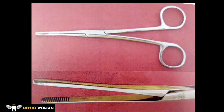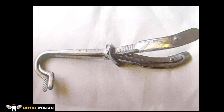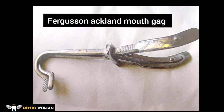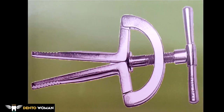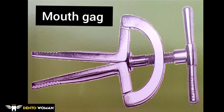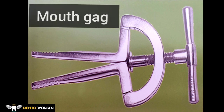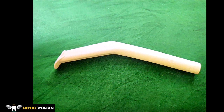Heister's mouth gag — an instrument used to forcefully open the mouth in cases of trismus. It has broad, serrated blades which rest on the occlusal aspect of the molars while the instrument is opened with slow, gradual force. It can also be used to keep the mouth open for intraoral procedures under general anesthesia.